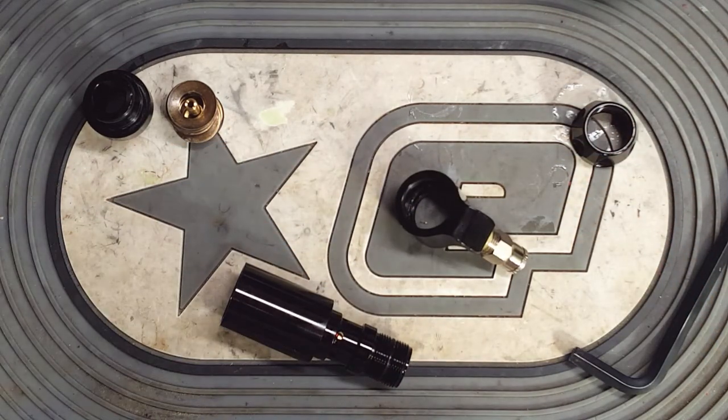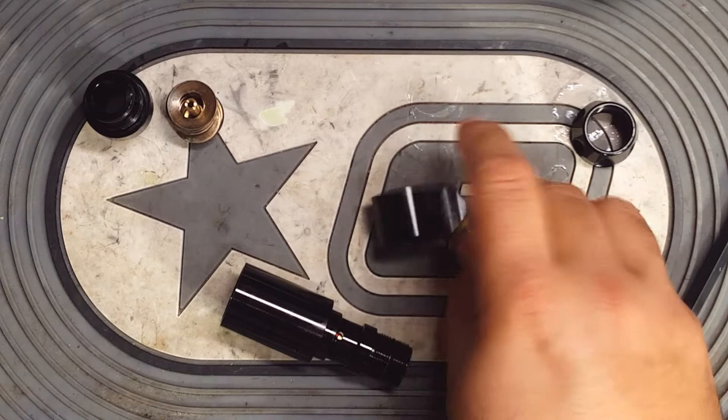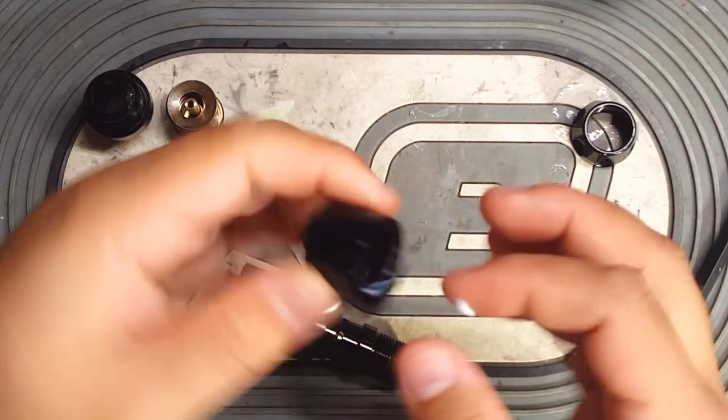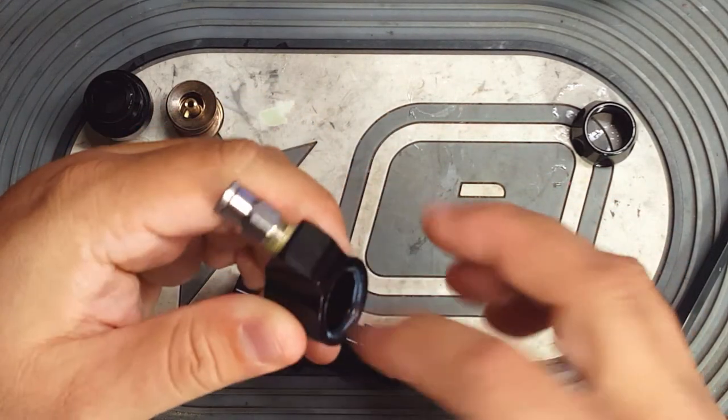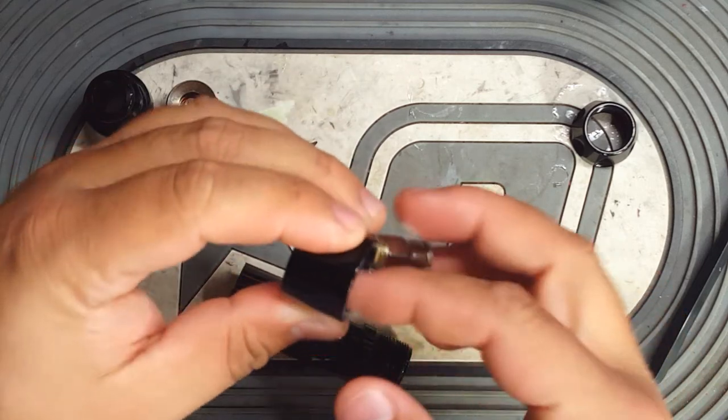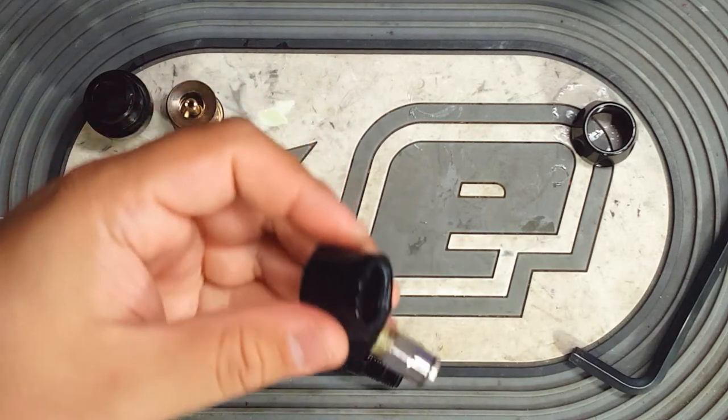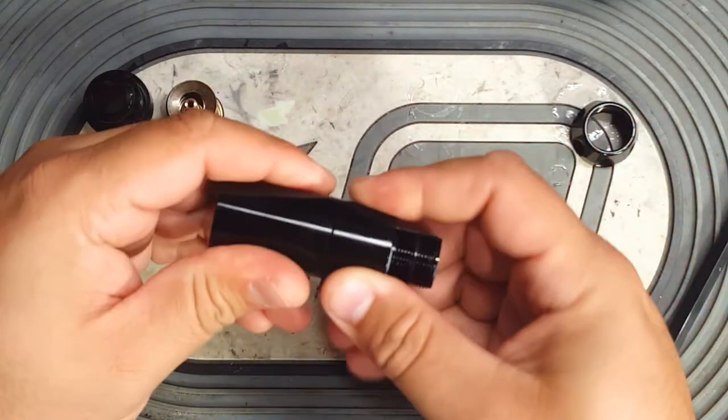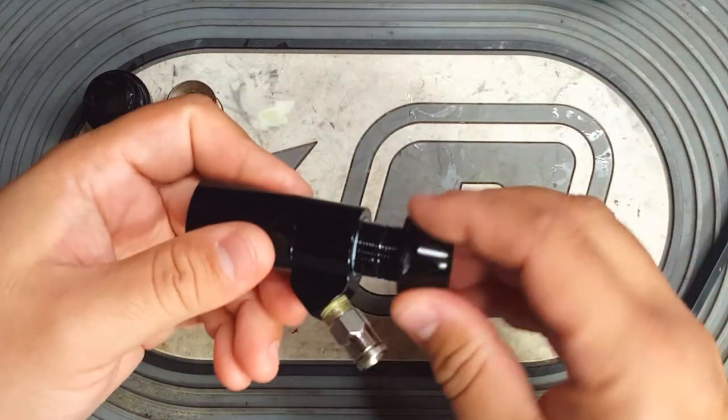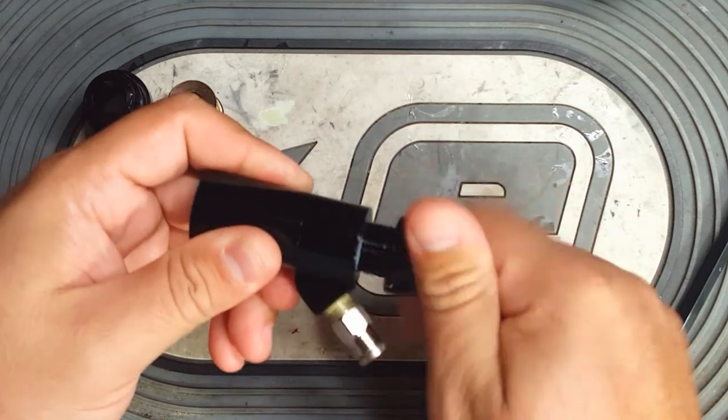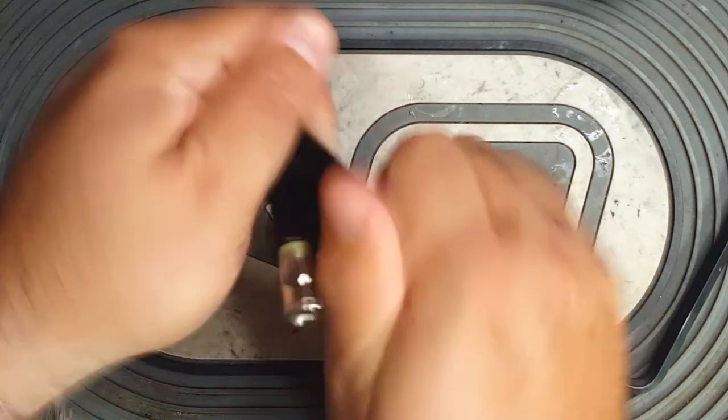For the swivel collar, a little bit of grease. This is just Dow 33. Doesn't have to be a ton just to keep the o-rings lubed. And the swivel collar goes on with the fitting facing downwards. And your lock collar goes back on the bottom.